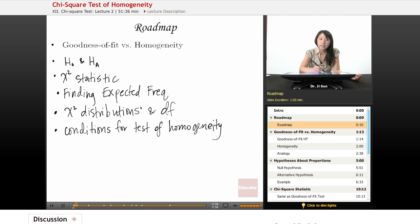Finally, we're going to go through chi-square distributions, as well as degrees of freedom, and the conditions for the test of homogeneity. When can you actually conduct this test, sort of statistically legally?